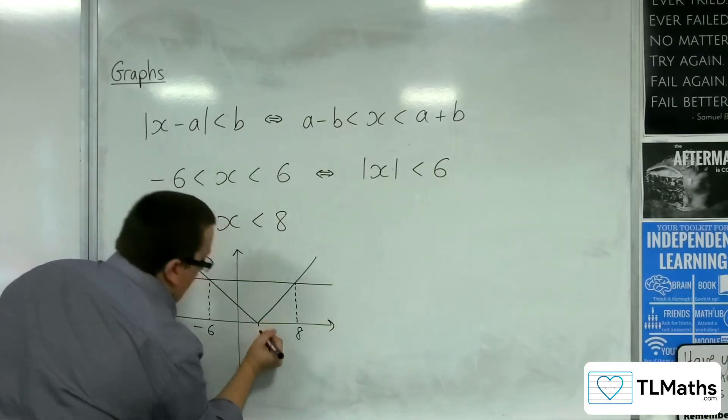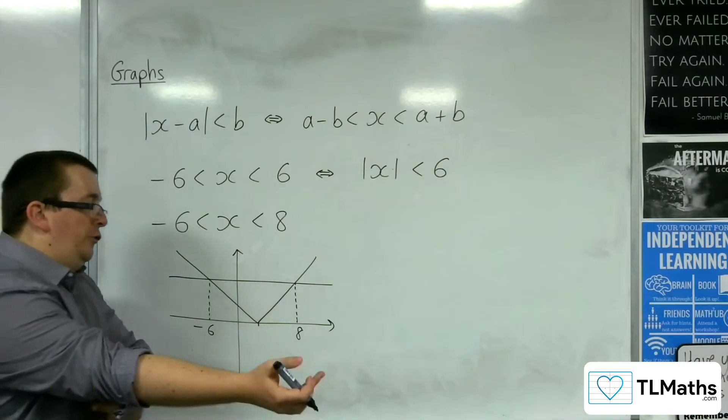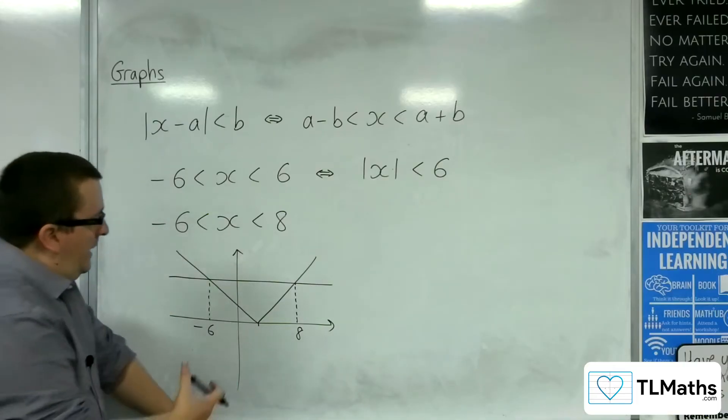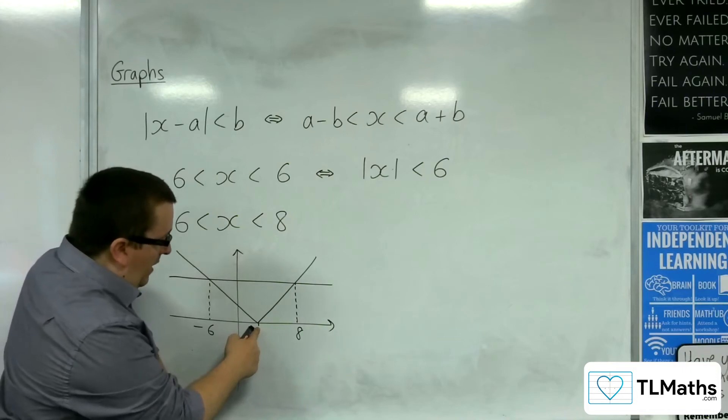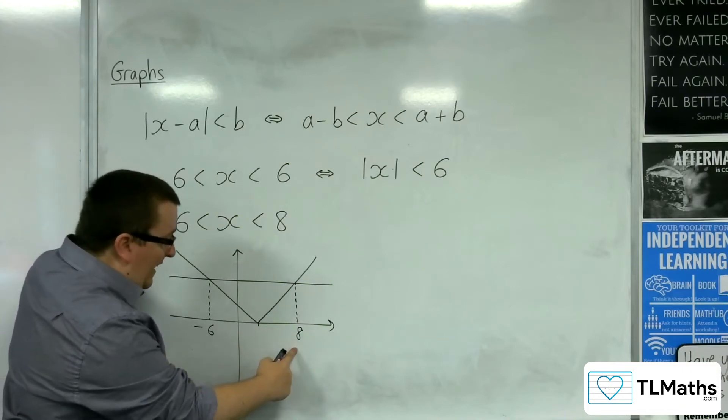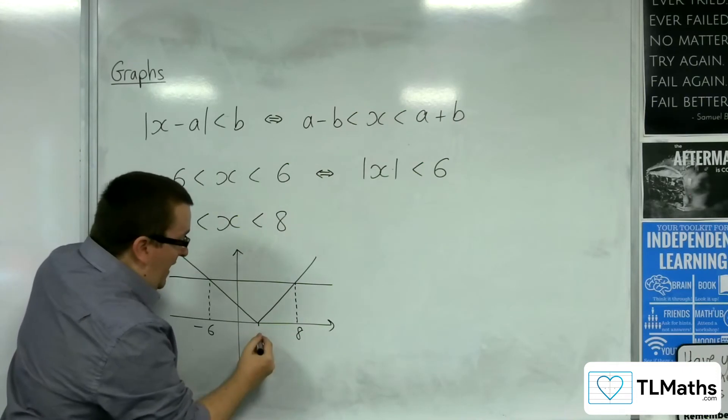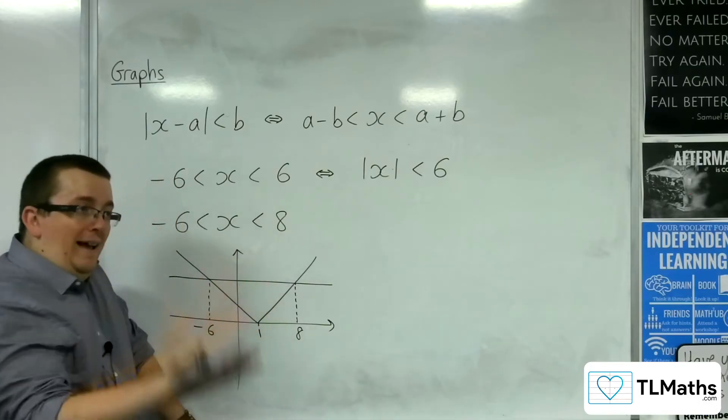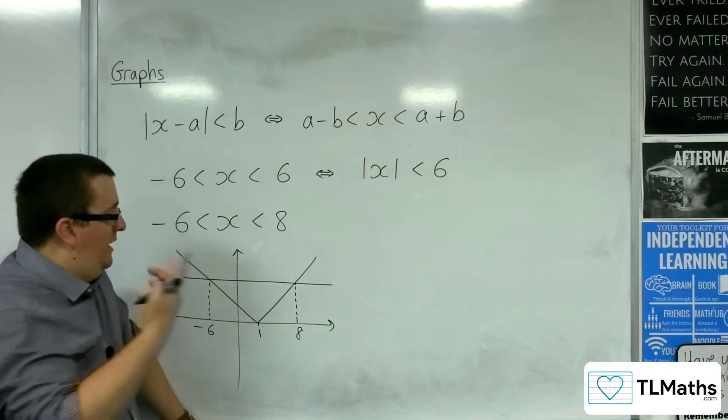So where would this have to be? Well, I know that the modulus graph is symmetric. So that means the vertex is going to be halfway between the minus 6 and the 8, which would have to be at 1. Minus 6 plus 8 is 2. Average of that, so divide by 2, is 1.